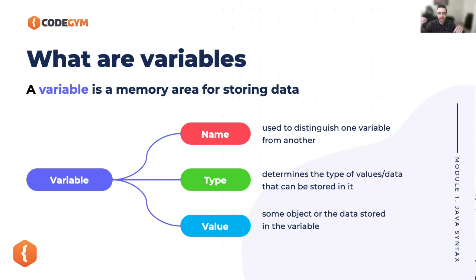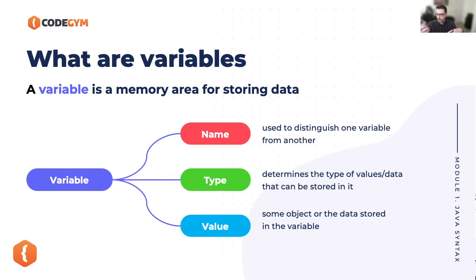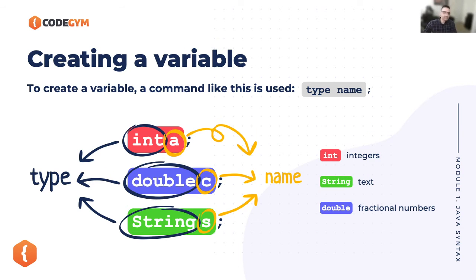To confirm: if I have a student and I want to create a variable called 'student', the variable name would be 'student', the value of that would be the name of the student — for example, 'Adam Jesse' — and the type of that variable would be a String.